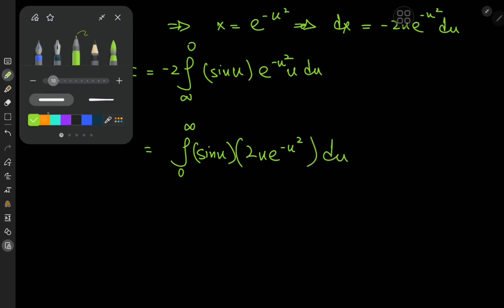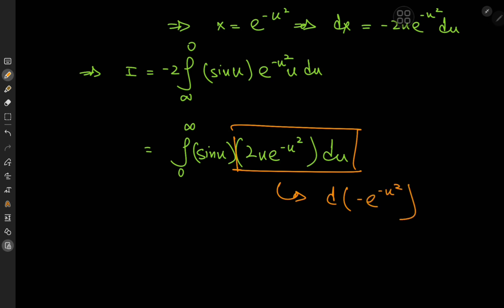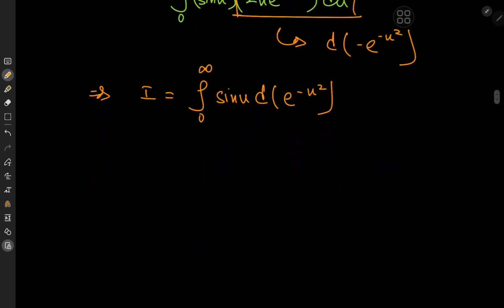This new integral is quite easily solved using integration by parts, because the 2u e to the negative u squared term is the differential of negative e to the negative u squared. So we can write I as the integral from 0 to infinity of sine u d of negative e to the negative u squared.